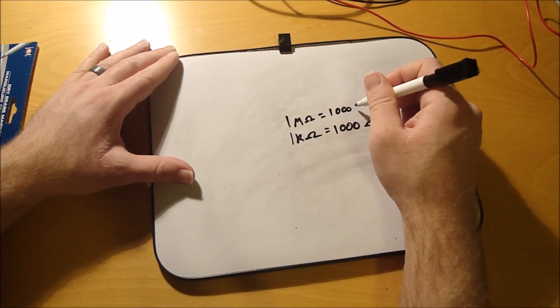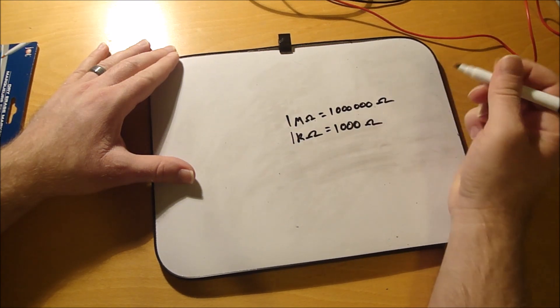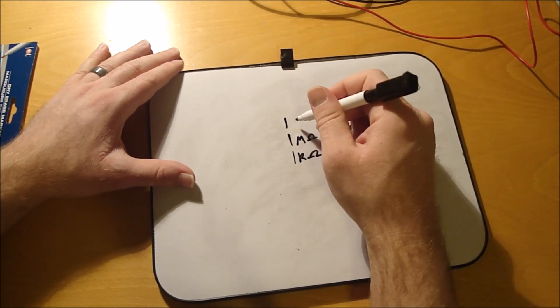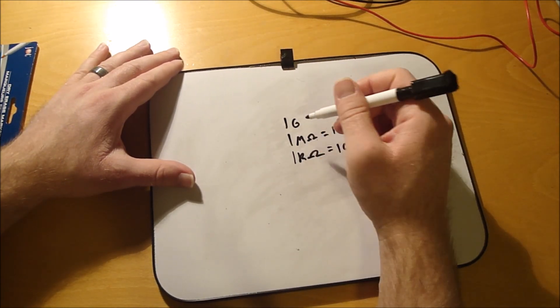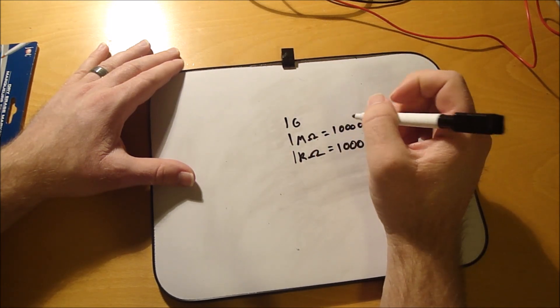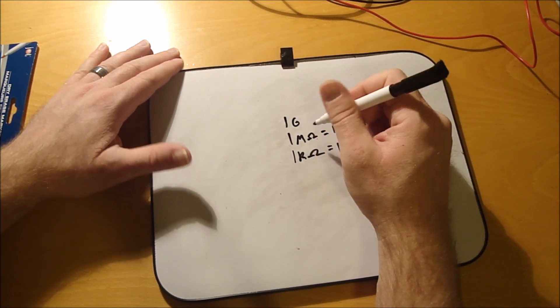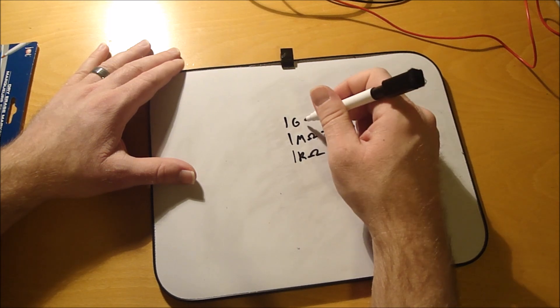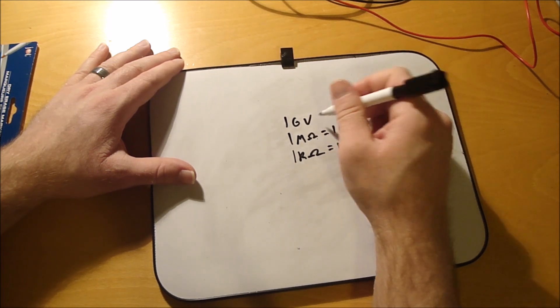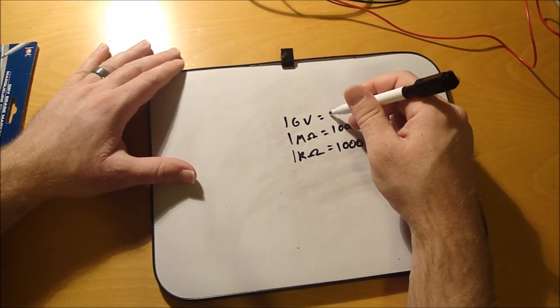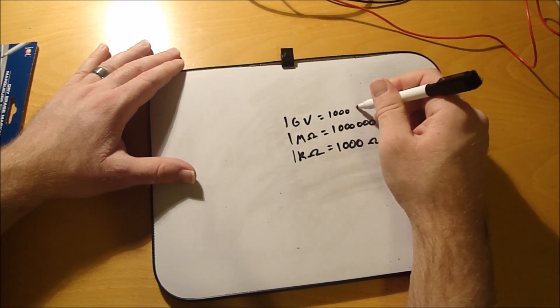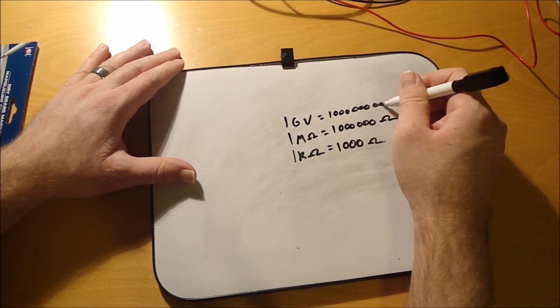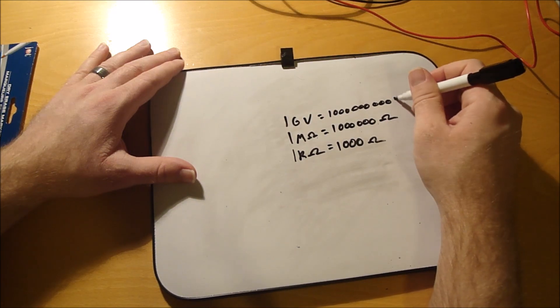And you got one giga, which you're not gonna really say gigaohms. Let's say you got one gigavolt, that's one billion volts.